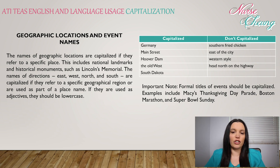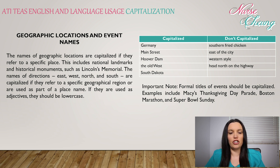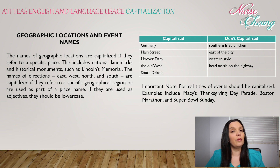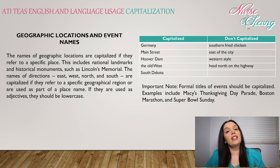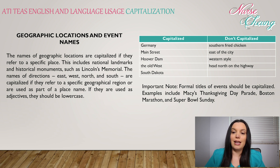The names of geographic locations are capitalized if they refer to a specific place. This includes national landmarks and historical monuments such as the Lincoln Memorial. The names of directions — east, west, north, and south — are capitalized if they refer to a specific geographical region or are used as part of a place name. If they are used as adjectives, they should be lowercase. Correct capitalization examples: Germany, Main Street, Hoover Dam, the Old West, and South Dakota. Words that should not be capitalized: southern fried chicken, east of the city, western style, and head north on the highway.